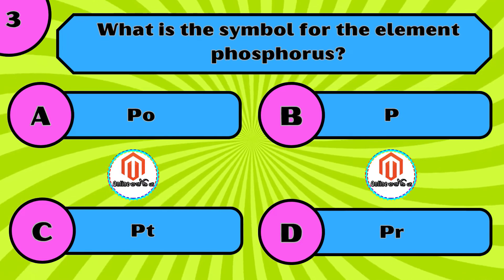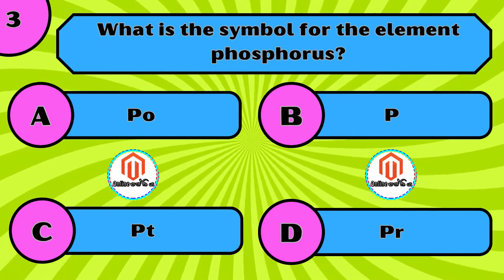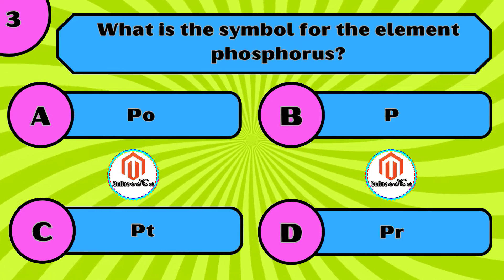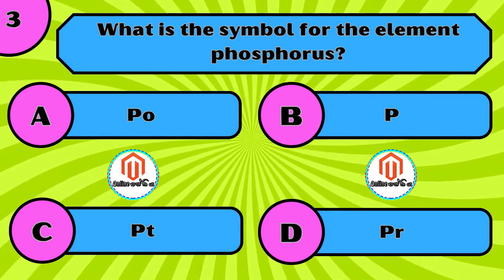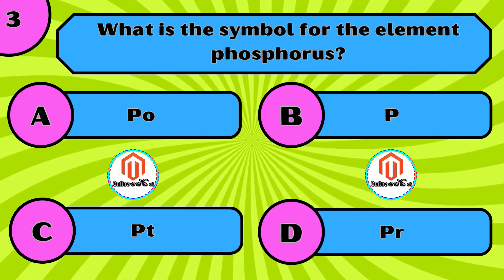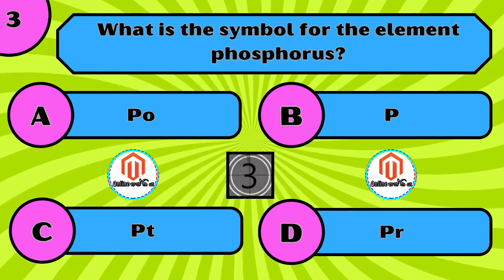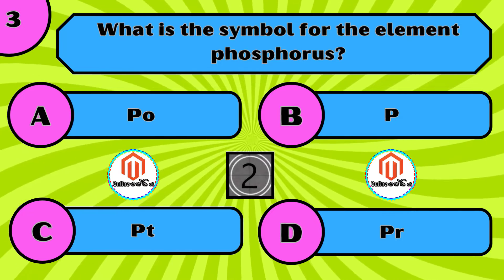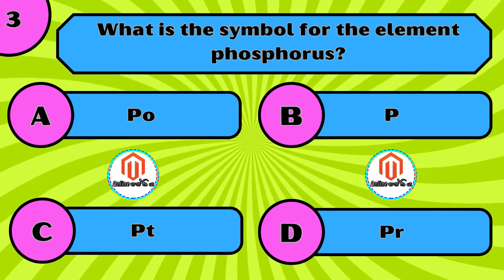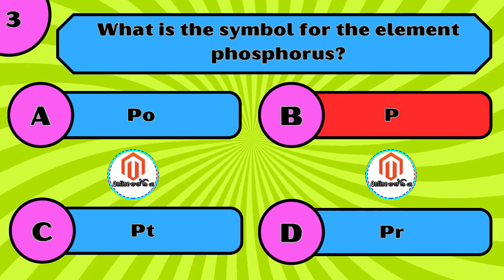What is the symbol for the element phosphorus? A) Po, B) P, C) Pt, D) Pr. The correct answer is B, P.